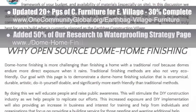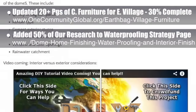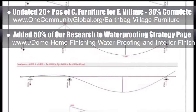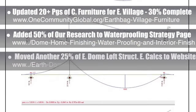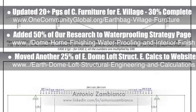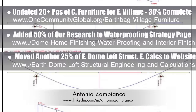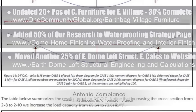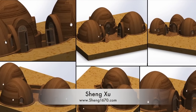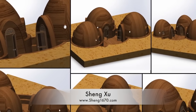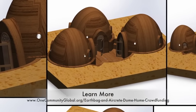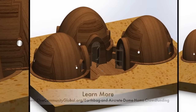We added 50 percent of our research to the waterproofing strategy page for the earth dome structures, bringing that page to about 40 percent complete. We moved another 25 percent of the earth dome loft structural engineering calculations to the website — this open source work was completed by Antonio Zambianco, civil engineering student, and is now 60 percent complete on the site. Shang Su, mechanical design engineer, finished his final round of SolidWorks design specifics for the three dome cluster of the upcoming crowdfunding campaign.